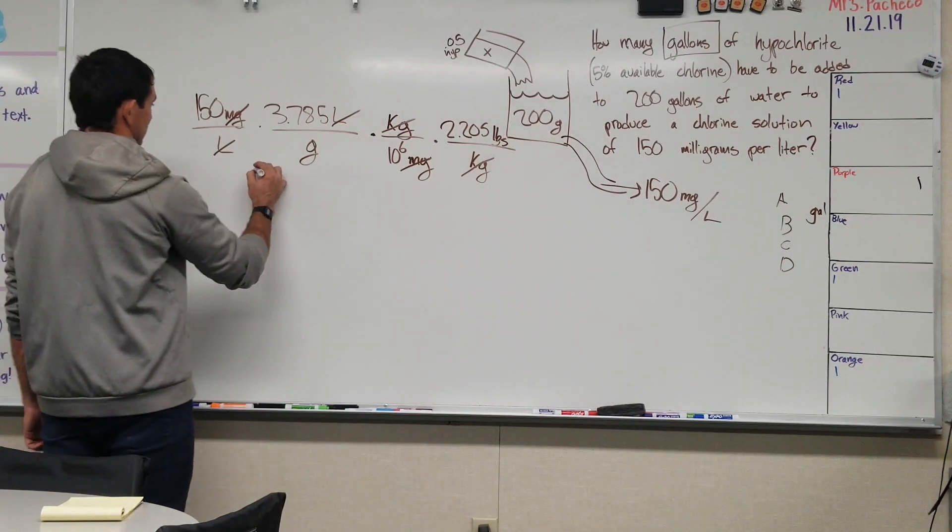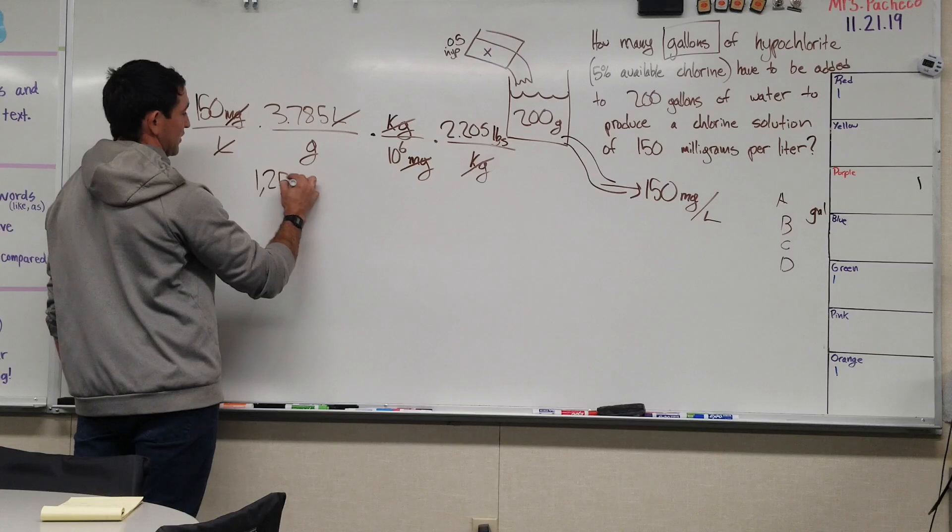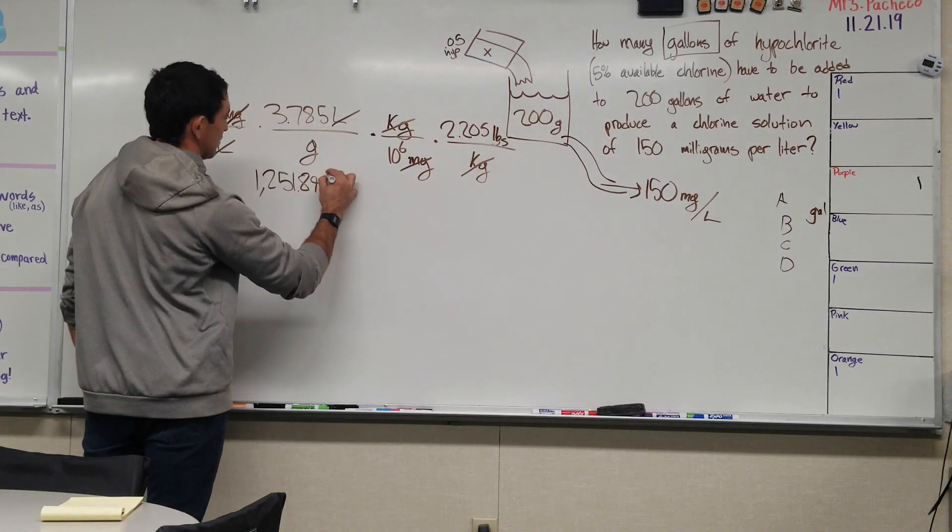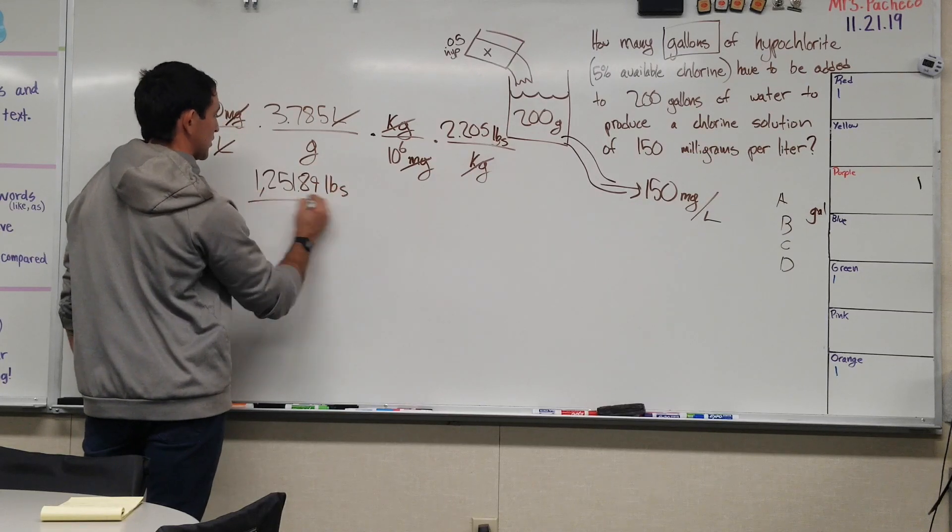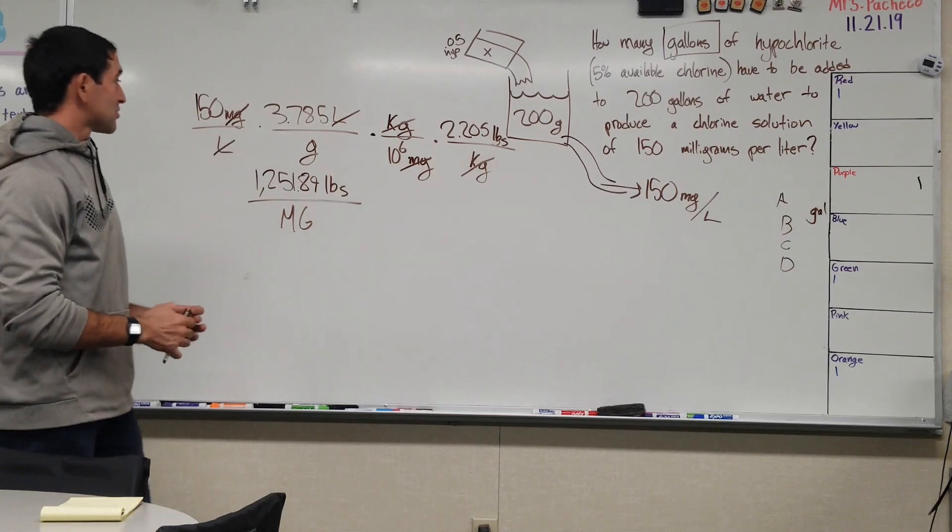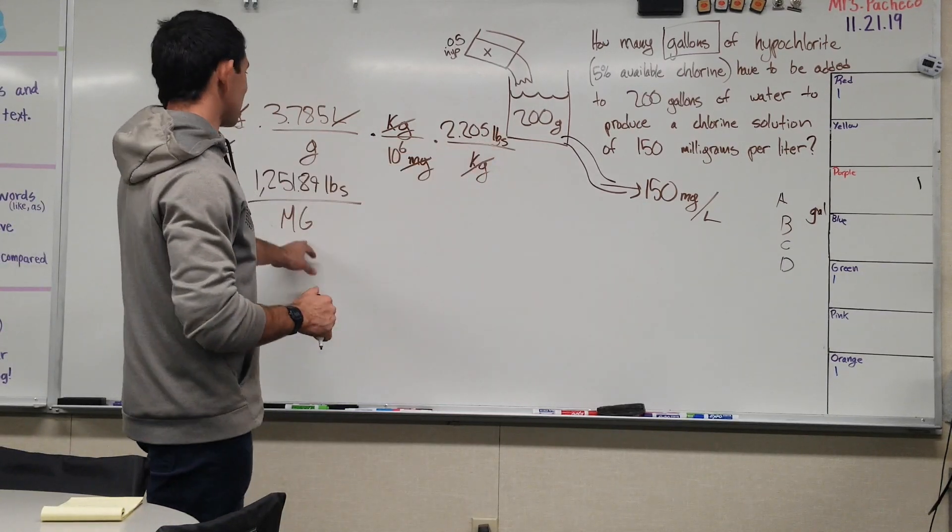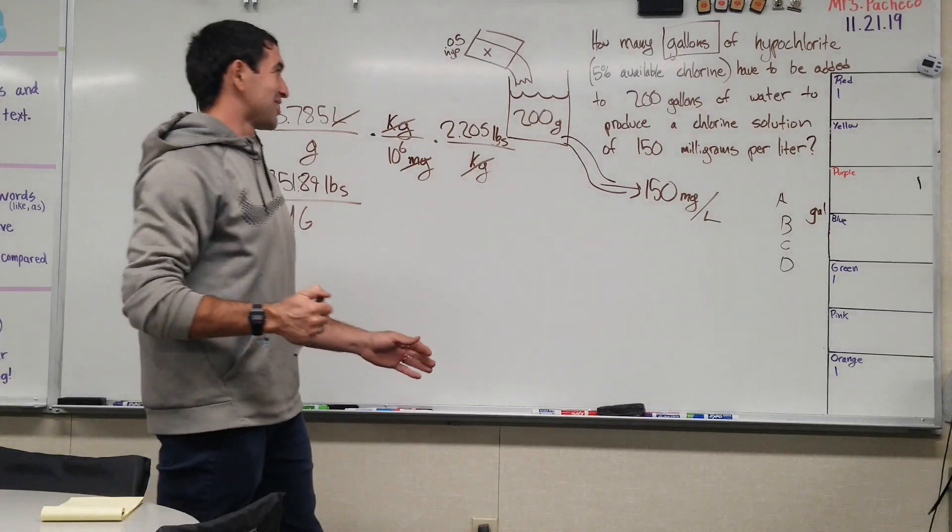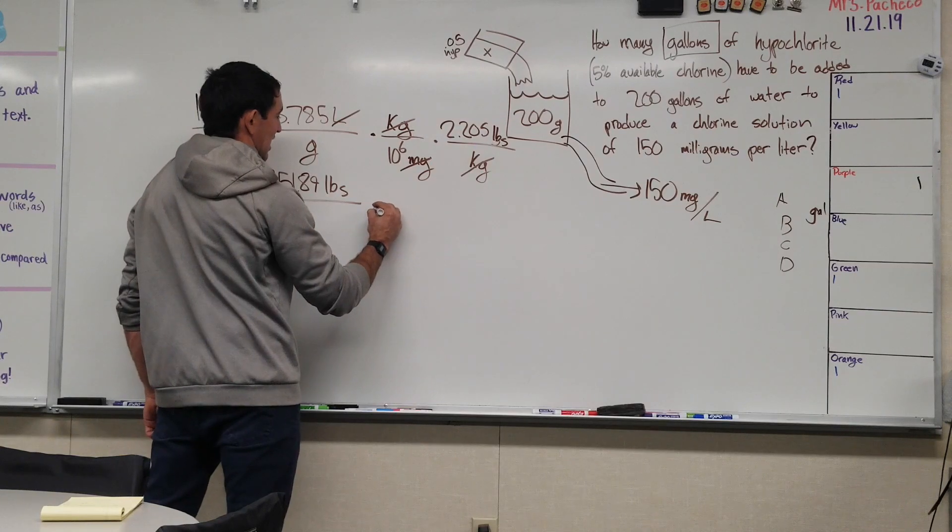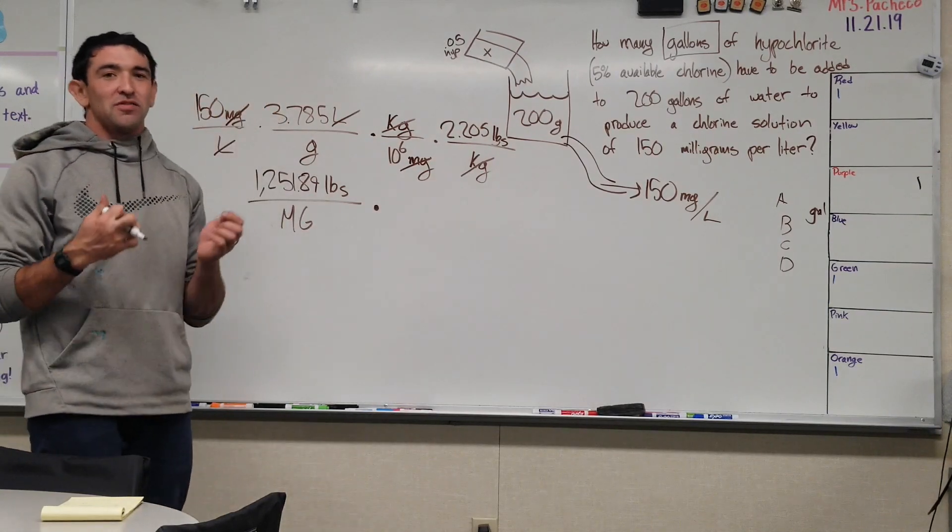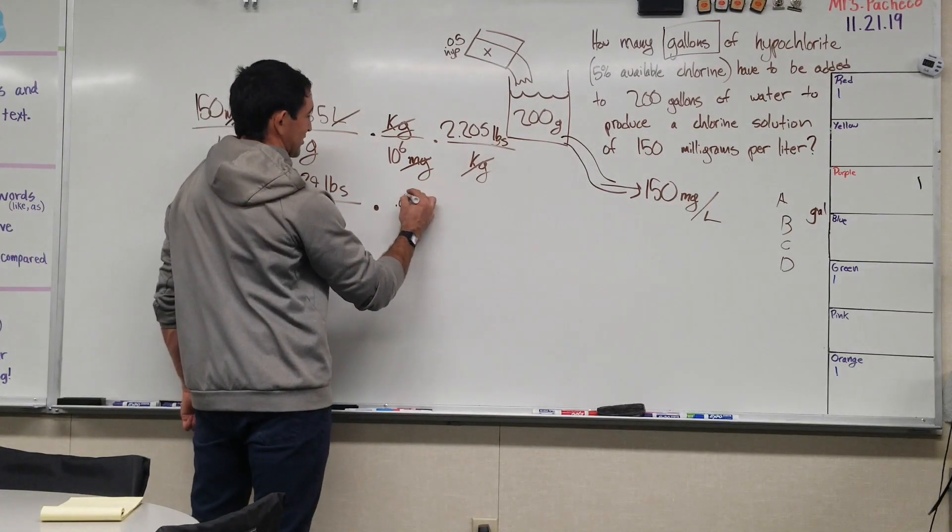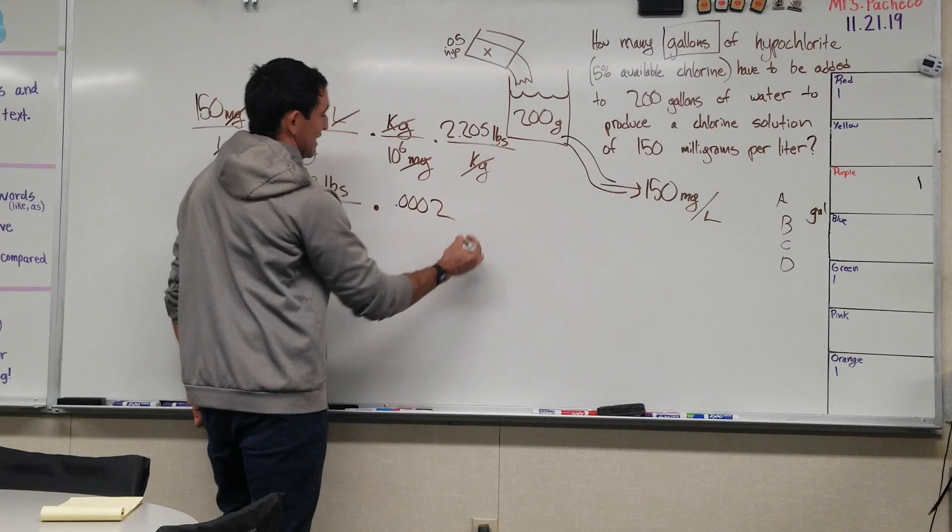And so how does this help us here? It doesn't really help us yet because it's a million gallons, right? We only need 200. So let's bring it down to earth. And what's the percentage of a million that 200 is? It is 0.0002. And I'll tell you why I know that.